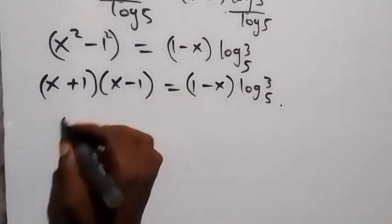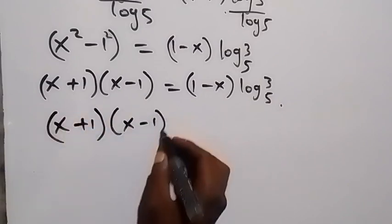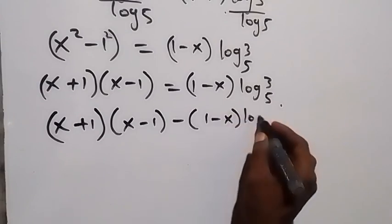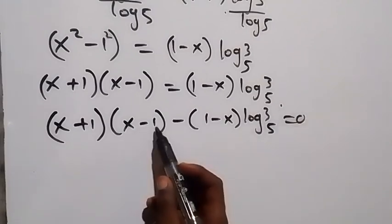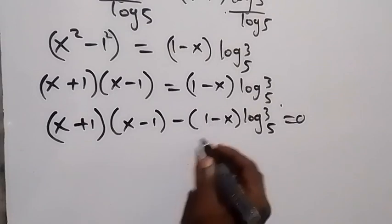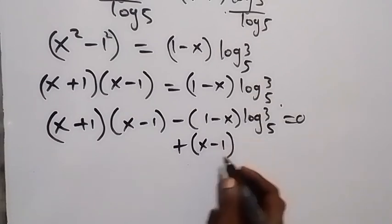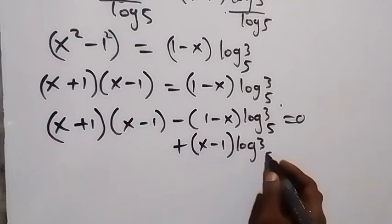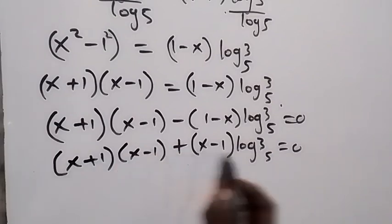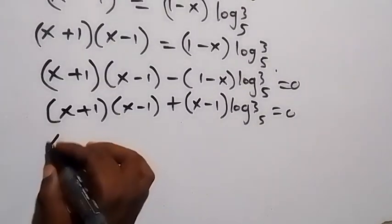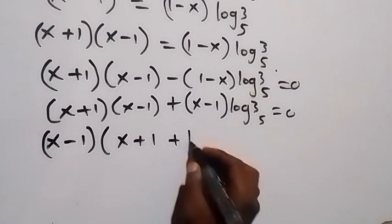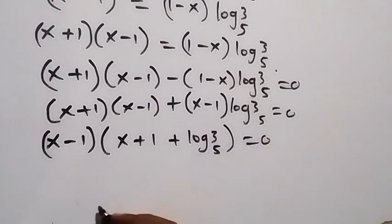Taking everything to one side, we have (x plus 1)(x minus 1) minus (1 minus x) times log 3 to base 5 equals 0. We note that (1 minus x) multiplied by minus 1 gives (x minus 1), so factoring out (x minus 1) we have: (x minus 1) times [(x plus 1) plus log 3 to base 5] equals 0.